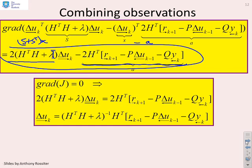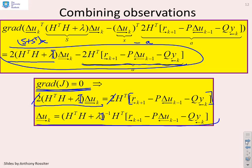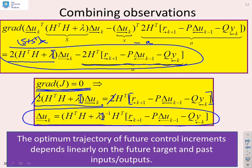Setting the gradient of J equal to zero gives: 2(H^T H + lambda I) delta_U_future = 2H^T times the reference vector. Cancelling the twos and inverting (H^T H + lambda I) yields the optimum solution. The optimum trajectory of future control increments is linear in the future targets, linear in the past inputs, and linear in the past outputs. This predictive control law turns out to be a simple linear control law.